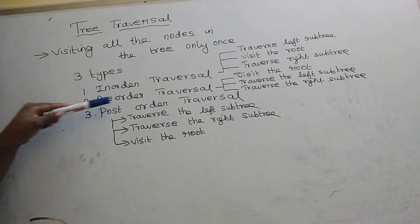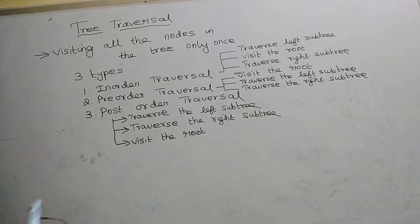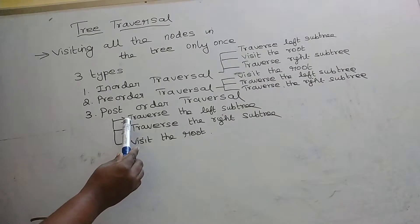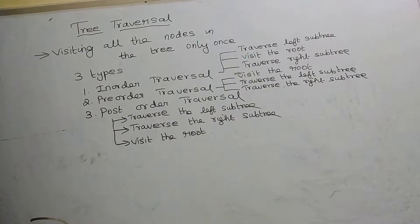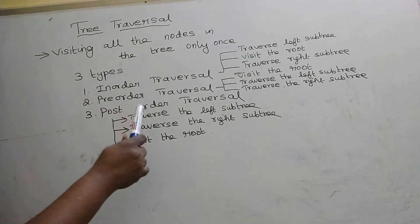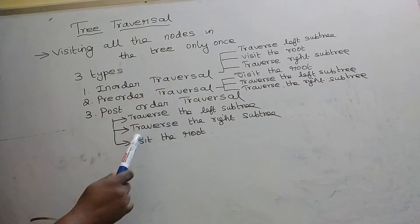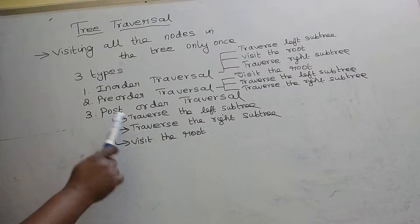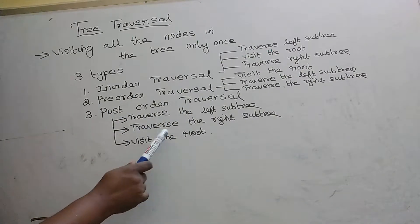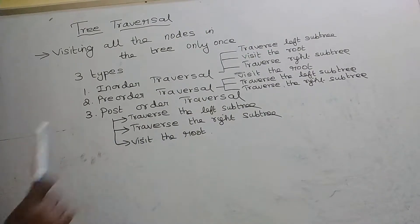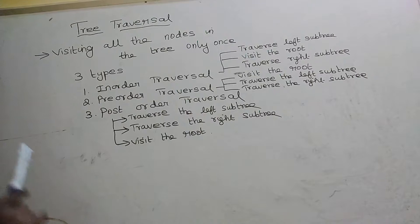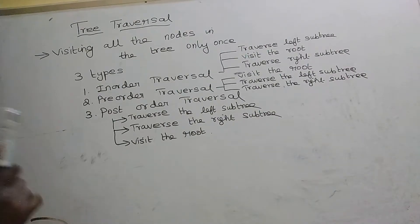The third type is postorder traversal. In postorder traversal, first we have to traverse the left subtree in postorder, then we have to traverse the right subtree in postorder, then visit the root. These are the three types of traversal used in a tree.